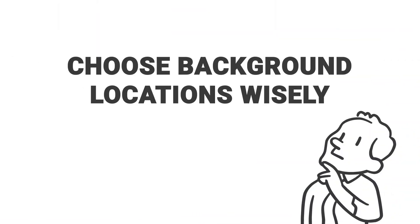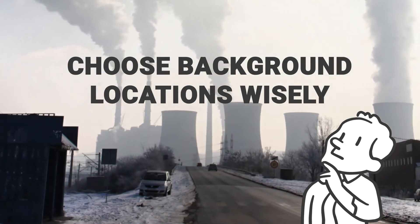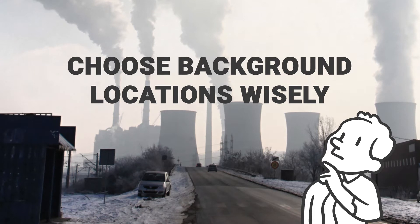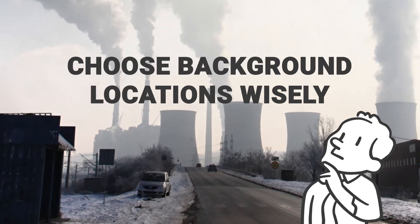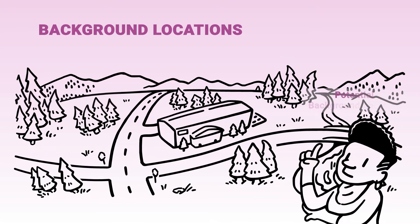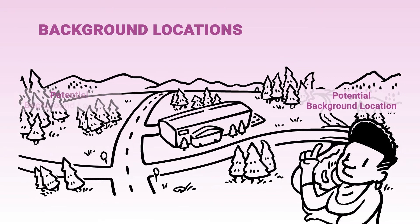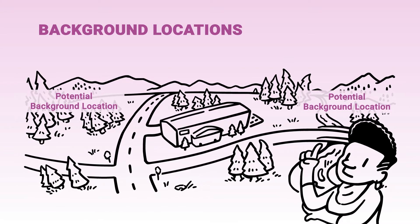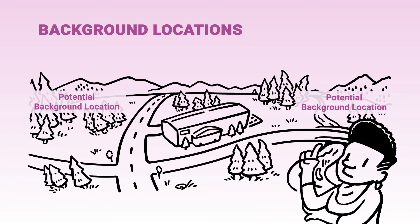When choosing a background location, it is important to consider how the land is being used at both the background location and the site being investigated. The background location should not be affected by contaminants from any past or present releases or activities being investigated at the site. To avoid this possibility, choose a background location that is up-gradient and/or upwind of the investigation site. Preferably, background locations are off-site. However, this may not be possible in large industrialized areas. In these instances, choose locations that are not obviously affected by site releases or activities caused by past or ongoing activities.